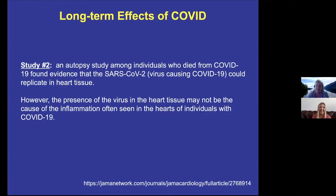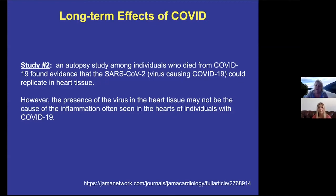Another study coming out of Germany — both of these are in JAMA, and the references are at the bottom — was an autopsy study of people who died from COVID. They found evidence that the SARS-CoV-2 virus was actually replicating inside heart tissue, so the virus got into the heart muscle and was forming new virus, which is very unusual. They also noted that the presence of the virus in the heart tissue didn't seem to be directly related to inflammation in the heart — they did see inflammation in heart muscle, but the two were not necessarily related. These are two new findings from just the last week looking at long-term effects of having COVID.